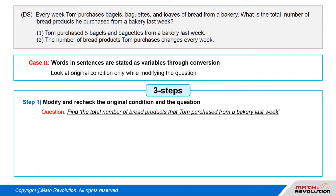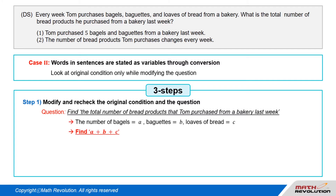Follow the first step of the variable approach by modifying and rechecking the original condition and the question. We should count the number of variables and equations in the original condition. We have to find the total number of bread products Tom purchased last week. Let the number of bagels, baguettes, and loaves of bread be A, B, and C. We have to find the value of A plus B plus C. The original condition mentions three variables — read the question carefully to find them.